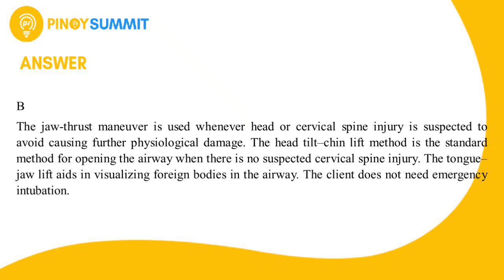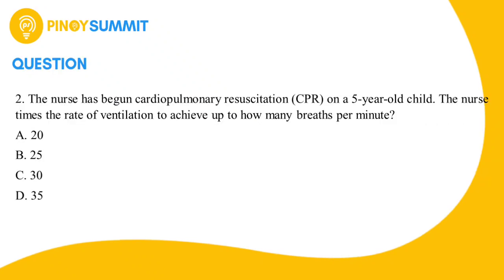Number two: The nurse has begun cardiopulmonary resuscitation (CPR) on a five-year-old child. The nurse times the rate of ventilation to achieve up to how many breaths per minute? A) 20, B) 25, C) 30, D) 35.